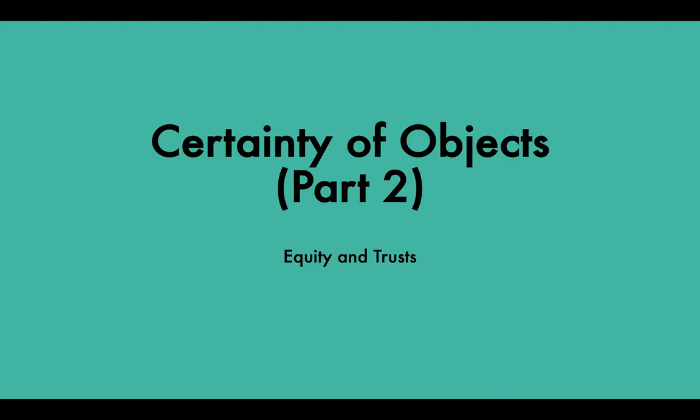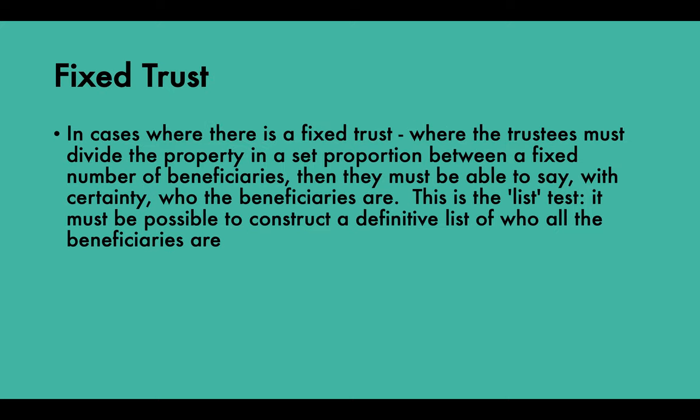This leads us to a discussion about fixed and discretionary trusts, because this is where the tests for certainty of objects apply. In cases where there is a fixed trust — where the trustee must divide the property in a set proportion between a fixed number of beneficiaries — they must be able to say with certainty who the beneficiaries are. This is the list test. It must be possible to construct a definitive list of all the beneficiaries, sometimes referred to as the class ascertainability test.